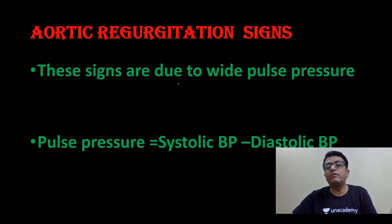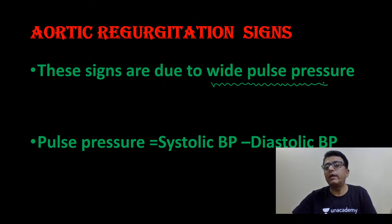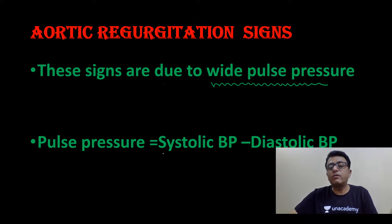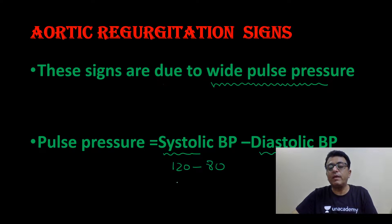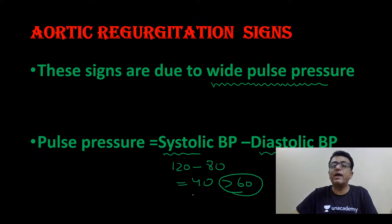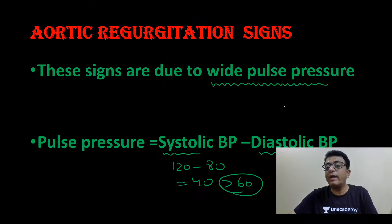All the signs of aortic regurgitation are due to wide pulse pressure. Pulse pressure is systolic BP minus diastolic BP. Suppose systolic BP is 120 and diastolic BP is 80 — pulse pressure is 40 in an older child. If it is more than 60, we call it wide pulse pressure. All the signs of AR are due to wide pulse pressure.